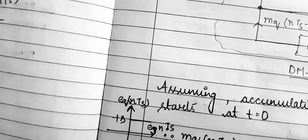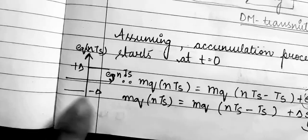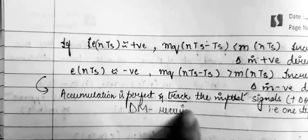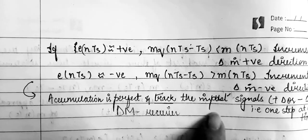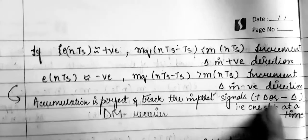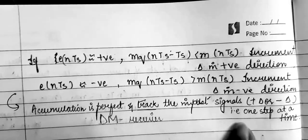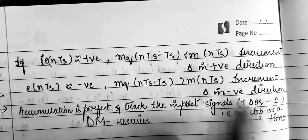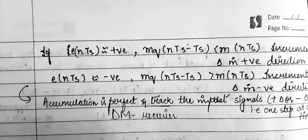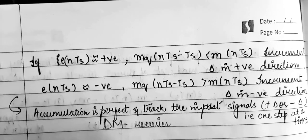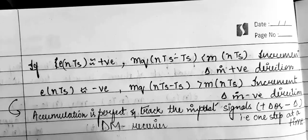From this we can say the accumulation is perfect and it tracks the input signal either in the positive delta function or negative delta function direction — that is, one step at a time. This was all about the DM transmitter. In the next lecture we will discuss about the DM receiver. Thank you.